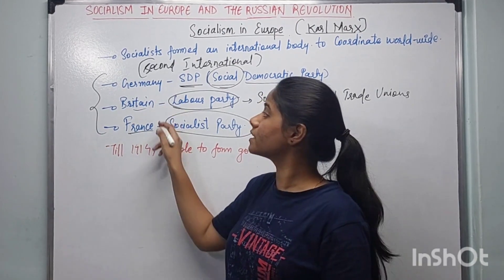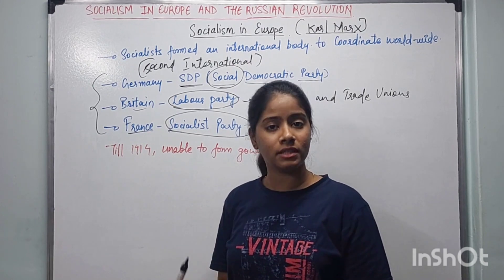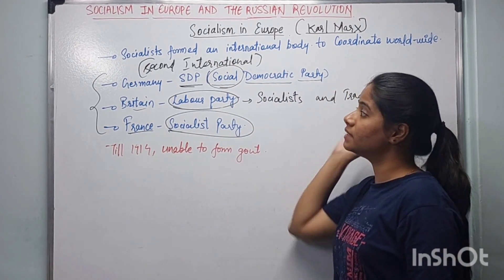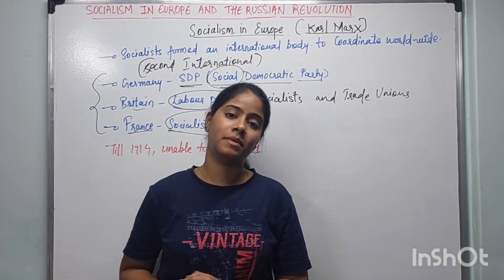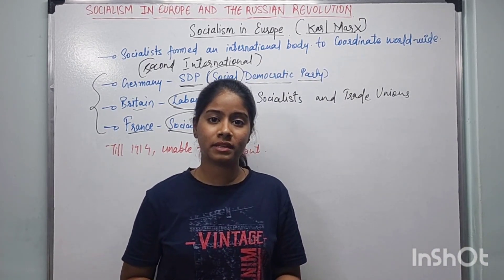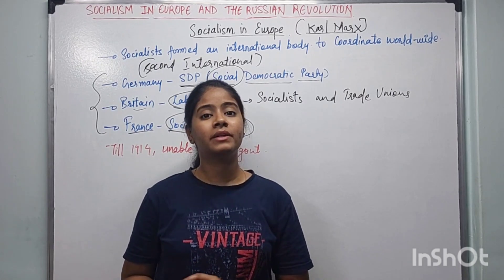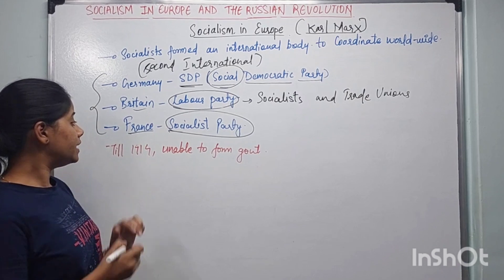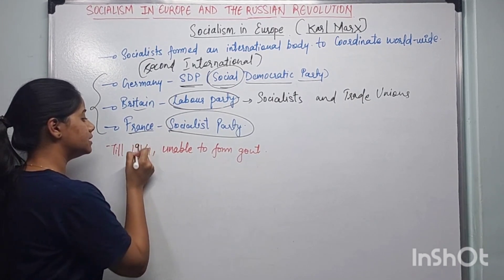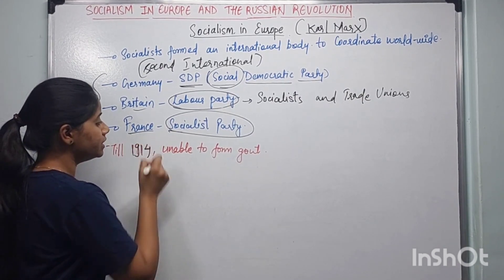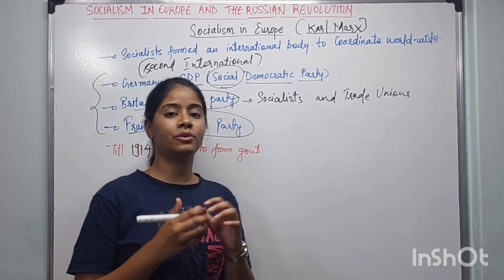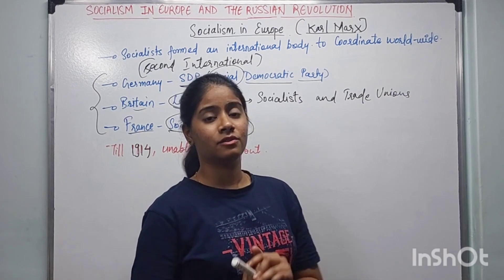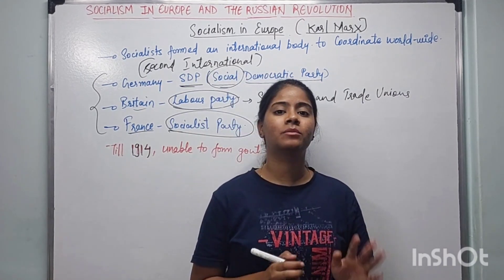What do they do? They make a political appearance through political parties — they run in elections. But until the year 1914, in any European country, despite building socialist parties, the socialists did not manage to gain a majority to form the government.